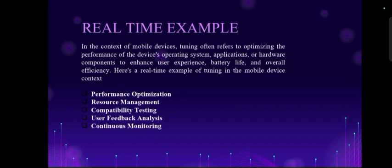These issues are solved by some methods like clearing the cache and clearing background running applications. Some mobile phones have built-in applications like optimizer, phone manager, system booster, etc. In the optimizing process, the system handles performance optimization, resource management, compatibility testing, user feedback analysis, and continuous monitoring.